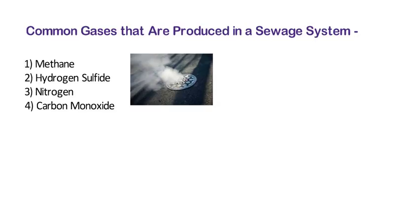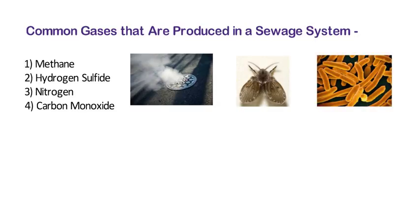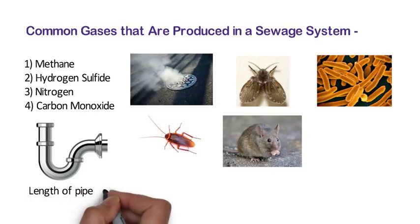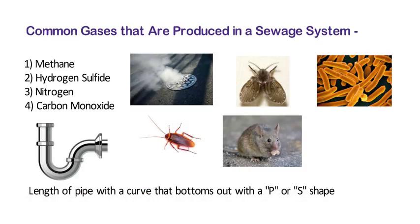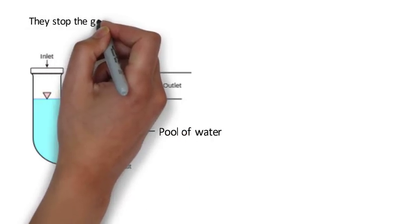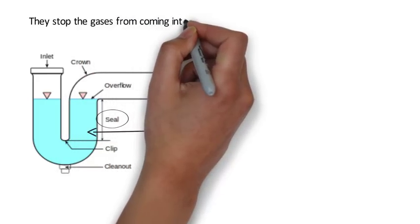To avoid the entry of these gases, insects, bacteria, cockroaches and mice inside the home or building, traps are constructed at the end of soil or waste pipes. A trap is a length of pipe with a curve that bottoms out in a P or S shape. The curve holds a pool of water that seals out gases rising from the sewer side of the pipe. Nearly all sewer pipes and fixtures in a building will have a trap water seal. These seals are very important as they stop the gases which form in sewer pipes from coming into the building.